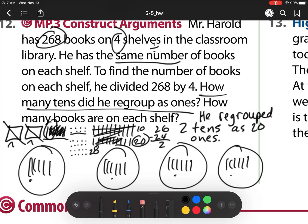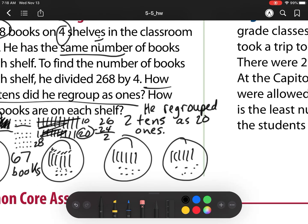1, 2, 3, 4, 5, 6, 7, 8, 9, 10, 11, 12, 13, 14, 15, 16, 17, 18, 19, 20, 21, 22, 23, 24, 25, 26, 27, 28. So now I can answer my question of how many books are on each shelf. There are 1, 2, 3, 4, 5, 6 tens, and 1, 2, 3, 4, 5, 6, 7 ones. So there are 67 books on a shelf.